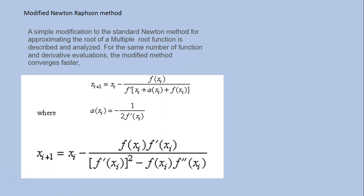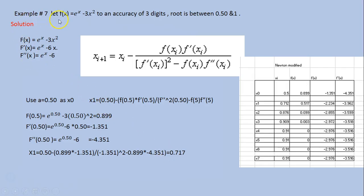For Example 7, let f(x) = e^x minus 3x², with an accuracy of three digits. The root is between 0.5 and 1. To use the general expression we need f(x), f'(x), and the new item f''(x). Starting: f(x) = e^x minus 3x², the first derivative f'(x) = e^x minus 6x, and f''(x) = e^x minus 6.